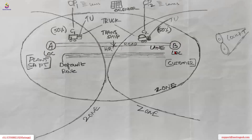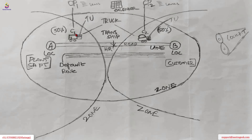There could be an intermediary location between source and destination called a transshipment location. There is also a mode of transportation — basically road — and then a means of transportation, which could be a truck, a tractor, or any other means. There could also be a transportation unit such as a container, and of course a calendar should be assigned so people work according to the timelines.